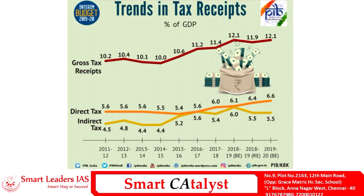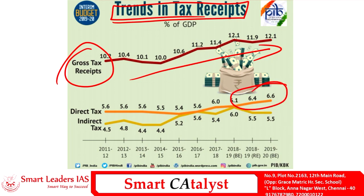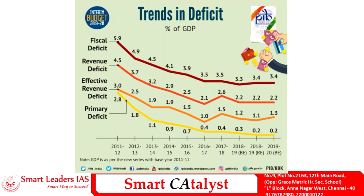This slide talks about the trends in tax receipts as a percentage of India's GDP. There is an increasing trend in gross tax receipts overall. Direct tax collection has more or less remained steady, but for the past three years there is an increasing trend. Indirect tax collection remained significantly low from 2011 to 2014; however, in 2018 it raised to a peak of about 6 percent, and after 2018 it remained stagnant at 5.5 percent of GDP.